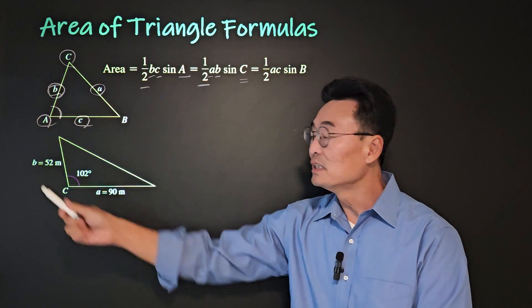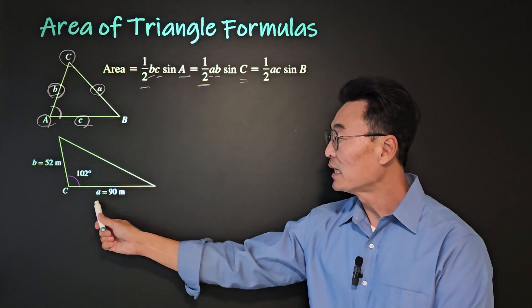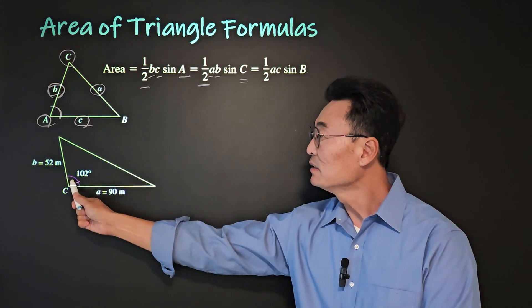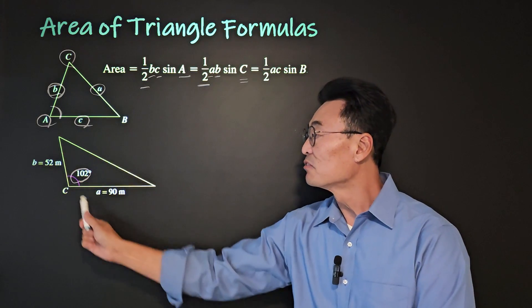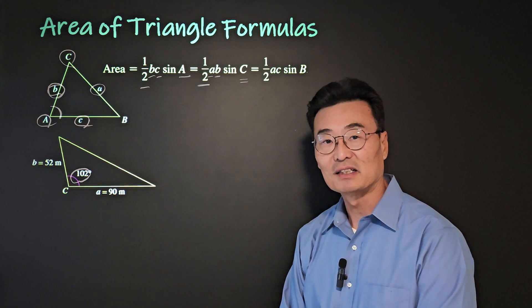So we're given side b, which is 52, and a, which is 90, and angle c as 102, which again is between the two sides given.